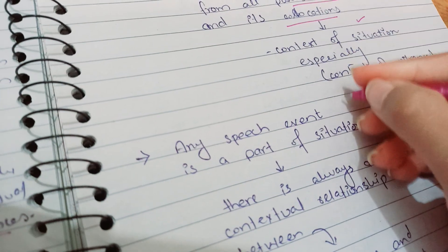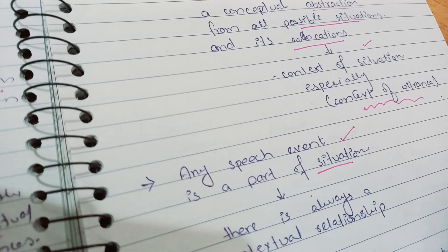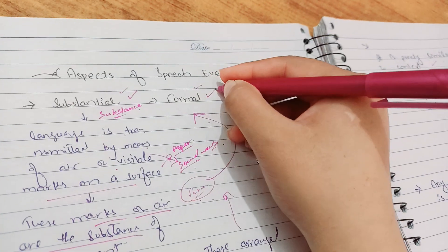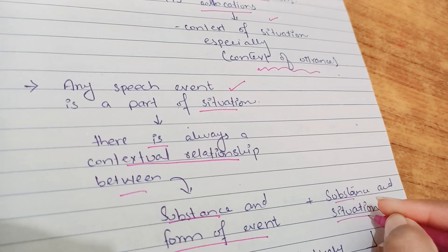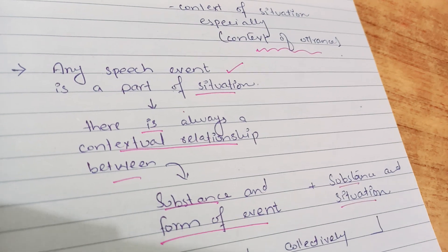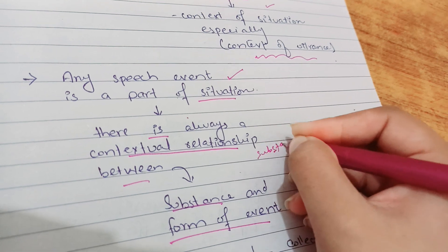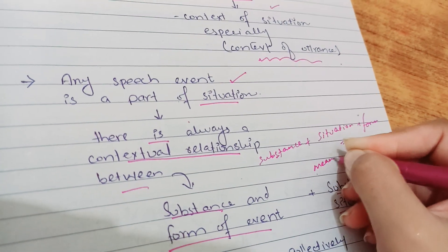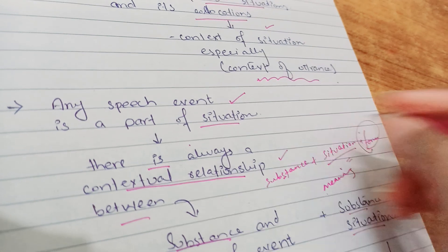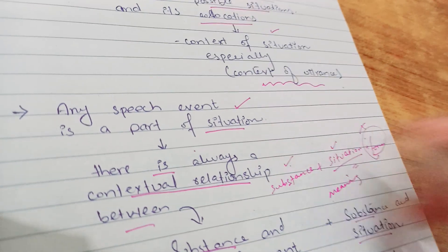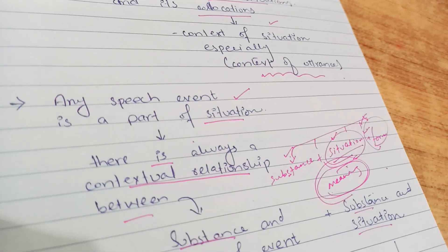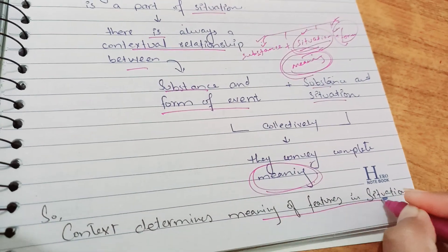Any speech event must be part of a situation, and there is always a contextual relationship between substance and the form of an event, and also between substance and situation. Collectively, complete meaning is conveyed when substance plus situation plus form work together to equal meaning. If substance is correct but situation or form is not, meaning will not be conveyed. All three must work together to convey complete meaning. Context determines the meanings of features in the situation.